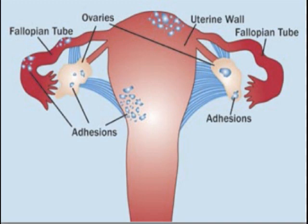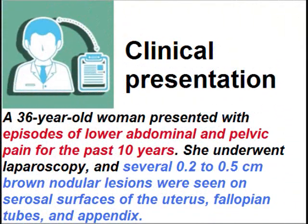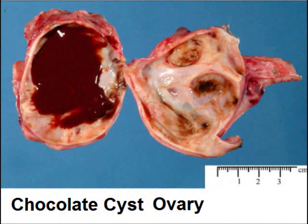These evoke an inflammatory response, causing adhesions, which may lead to dysmenorrhea and infertility. Clinical presentation: a 36-year-old woman presented with episodes of lower abdominal and pelvic pain for the past 10 years. She underwent laparoscopy and several 0.2 to 0.3 cm brown nodular lesions were found. The common site is the ovary.